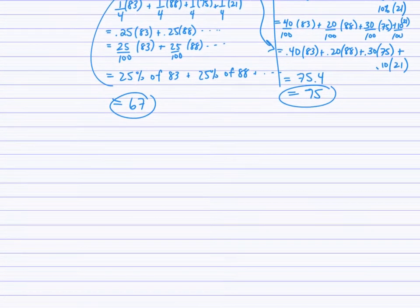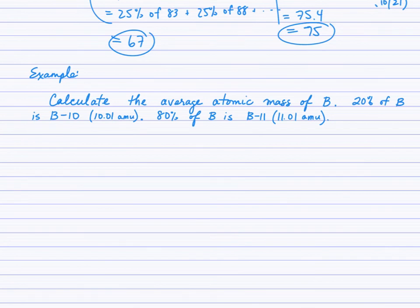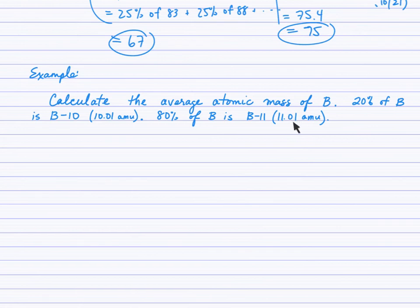Let's look at one more example specifically in chemistry. Calculate the average atomic mass of boron, given that 20% of boron atoms have a mass of 10.01 atomic mass units, and 80% of boron atoms have a mass of 11.01 atomic mass units. Even though we use the notation boron-10 and boron-11 for the two isotopes, the masses are provided with more precision — to two decimal places. So round your answer to two digits after the decimal. Go ahead and find the weighted average: 20% of the atoms have a mass of 10.01, and 80% have a mass of 11.01.